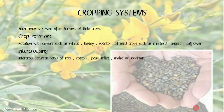Cropping System: Sunhemp is sown after harvest of rabi crops. Crop Rotation: Rotation with cereals such as wheat, barley, potato, and oilseed crops such as mustard, linseed, and safflower. Intercropping: Sunhemp can be intercropped between rows of ragi, cotton, pearl millet, maize, or sorghum.